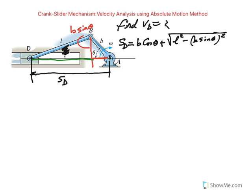Now I'm going to take the derivative of this, but before I take the time derivative to find velocity of D, let me rewrite the equation for S sub D. I write it as B cosine theta, and for the sake of taking derivative, let me write this as L squared minus B squared sine squared theta, and raise this to power 1 half. It's easier for taking the derivative.